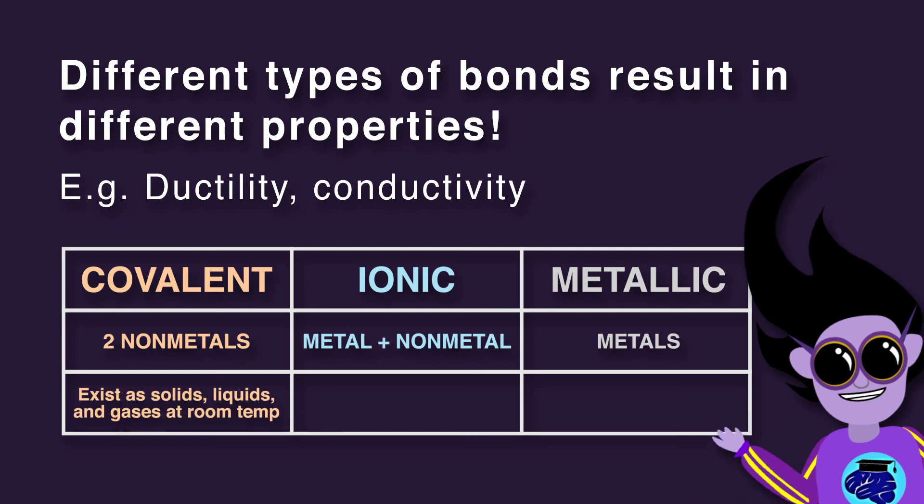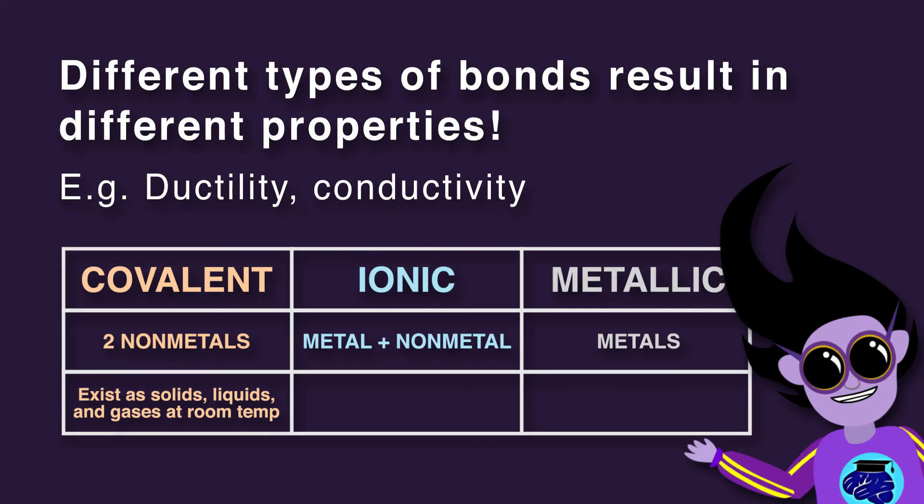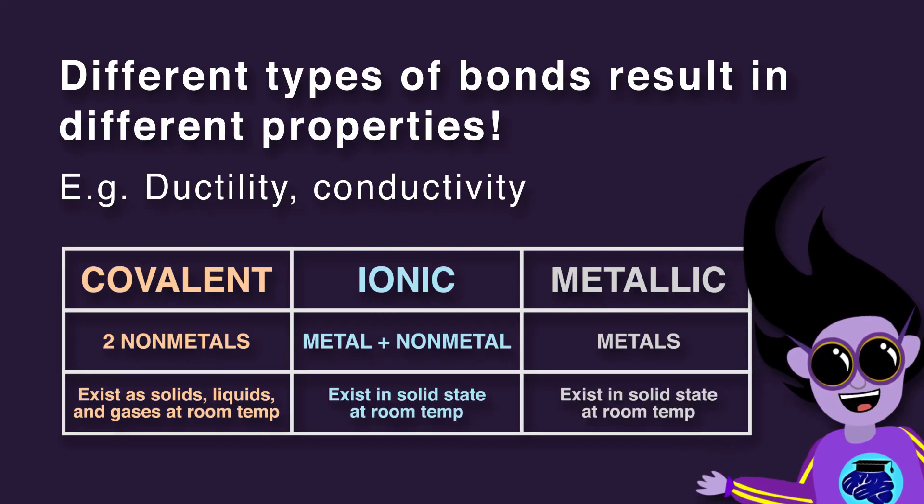Molecules with covalent bonds exist as solids, liquids, and gases at room temperature, while substances with ionic and metallic bonds exist in solid state at room temperature.